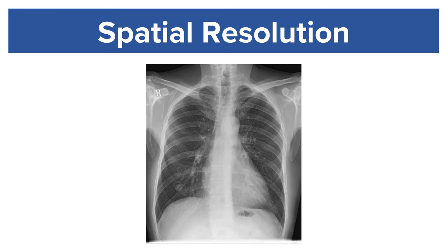We notice that this nodule looks different than lung and different than rib. If this image had low spatial resolution, the provider would not be able to tell the difference between that nodule and the rest of the rib.